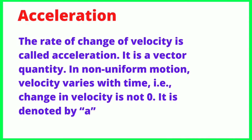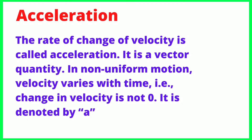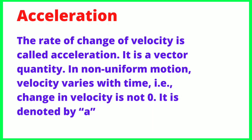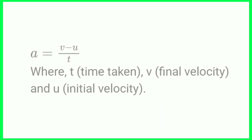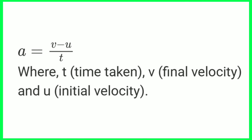Next is acceleration. The rate of change of velocity is called acceleration. It is a vector quantity. In non-uniform motion, velocity varies with time, so the change in velocity is not zero. Acceleration is denoted by 'a' and its unit is meters per second squared. The formula is: a = (v - u) / t, where v is final velocity and u is initial velocity.